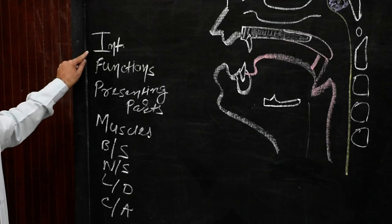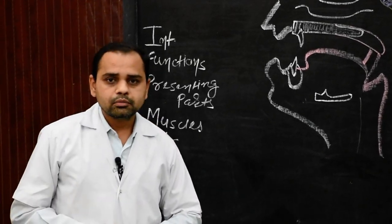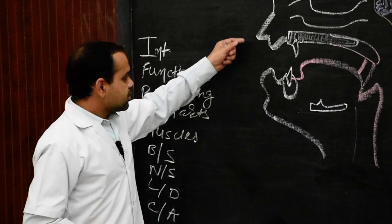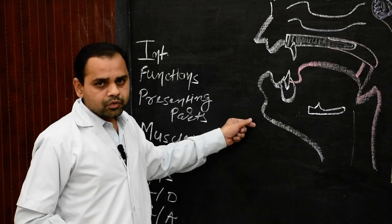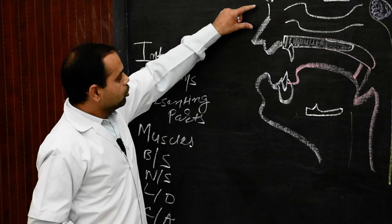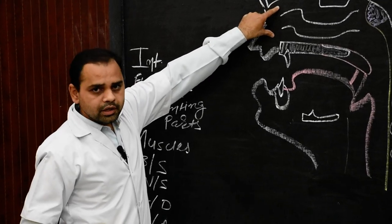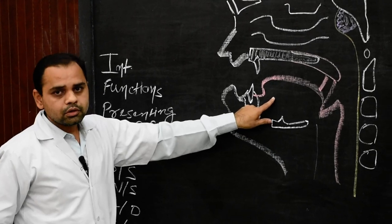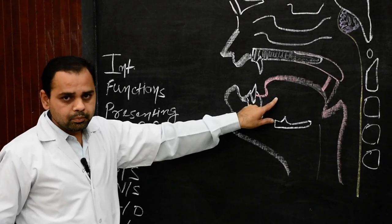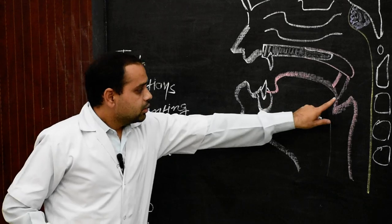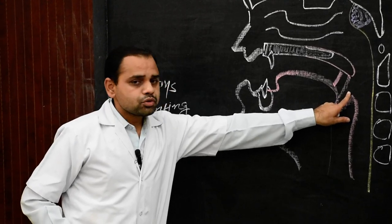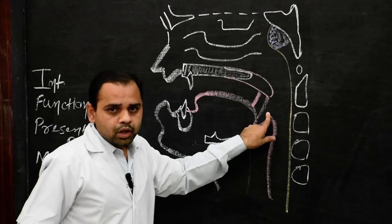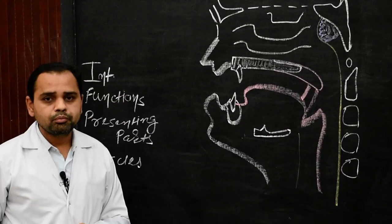First is introduction. The tongue is a mobile muscular organ present in the oral cavity. This diagram is a sagittal section of the head and neck. In this section you will see this area is known as nasal cavity, this portion is known as oral cavity, and this is the diagram of the tongue. The tongue lies partially in the oral cavity and partially in the oropharynx. This portion is known as oropharynx. It is a mobile muscular organ covered by mucous membrane.